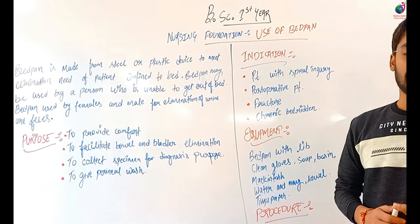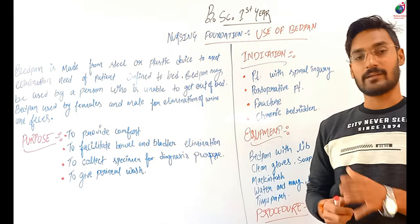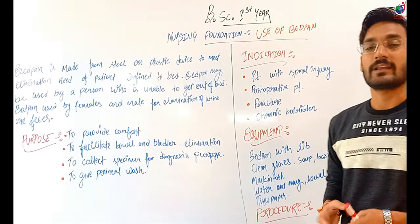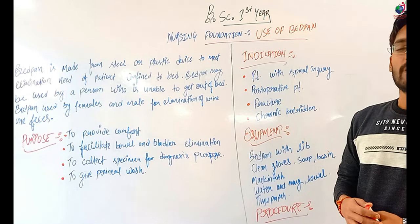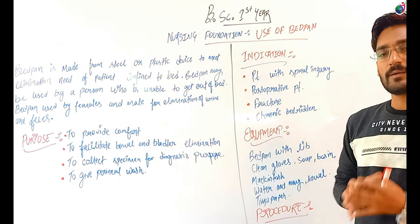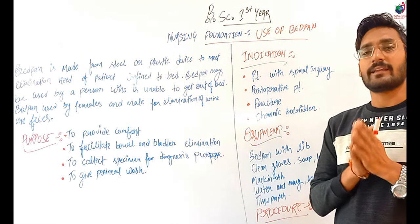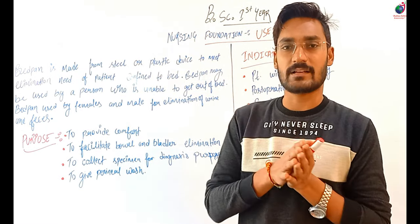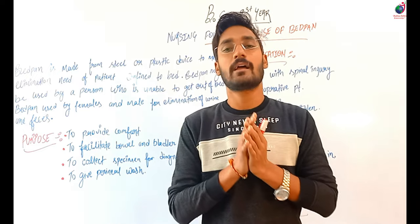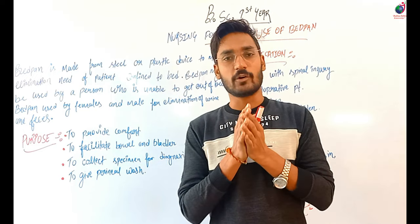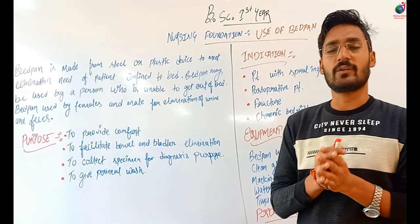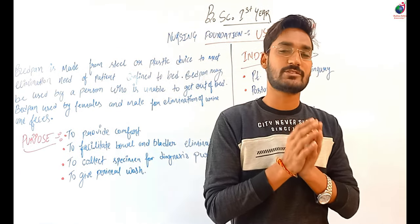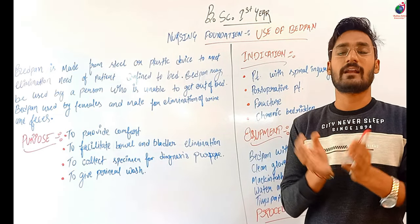We have to discuss about bedpan use and how to use it. How does this happen? If it's plastic or steel, you can see it. What do we do for the faeces or the urine?